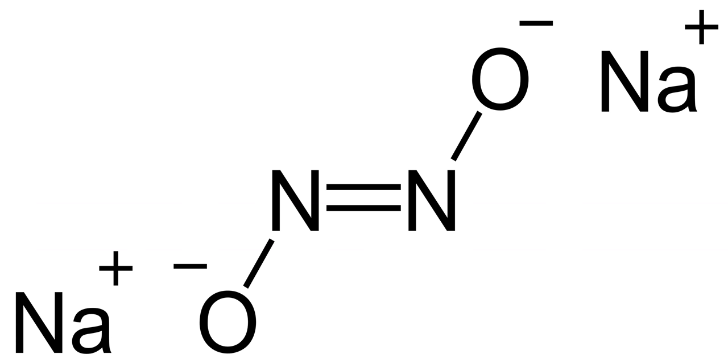Sodium hyponitrite trans was prepared in 1927 by A.W. Scott by reacting alkyl nitrites, hydroxyl ammonium chloride, and sodium ethoxide.